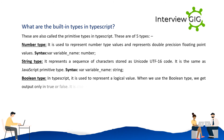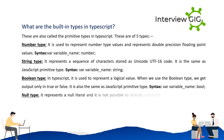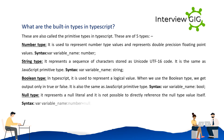Boolean type: used to represent a logical value. When we use the boolean type, we get output only in true or false. It is also the same as JavaScript's primitive type. Syntax: var variable_name: bool.